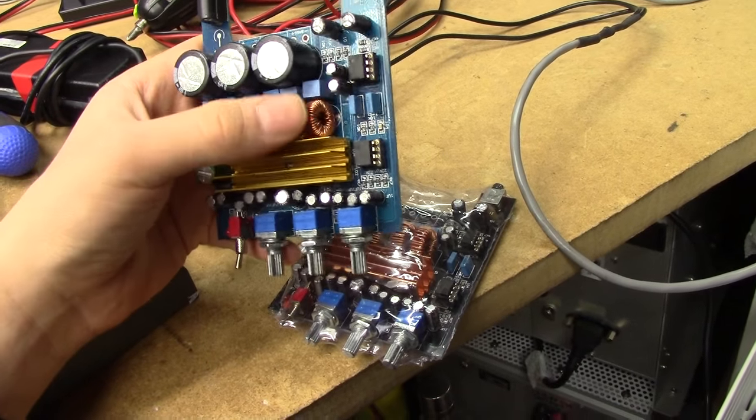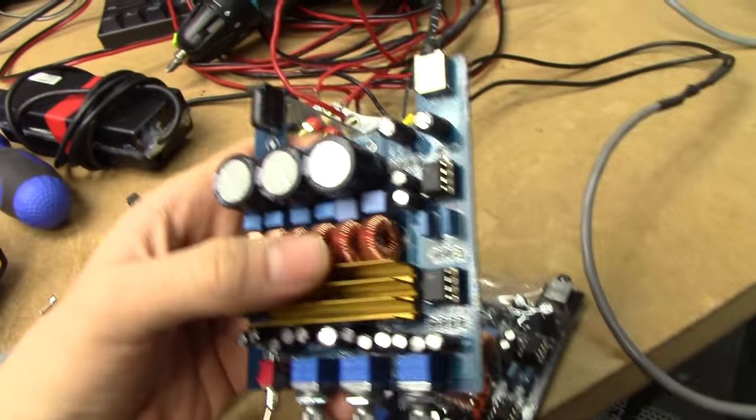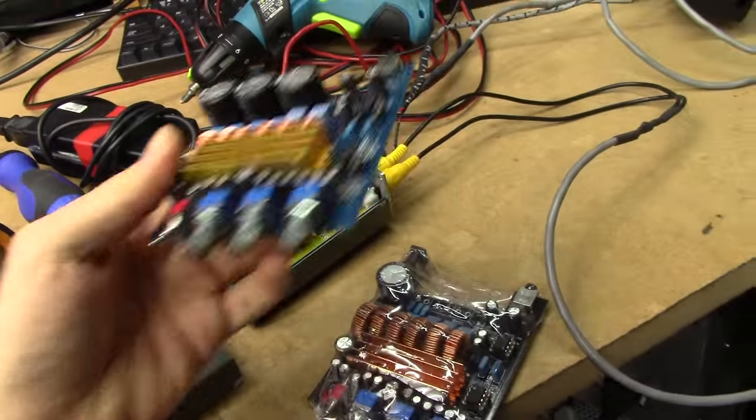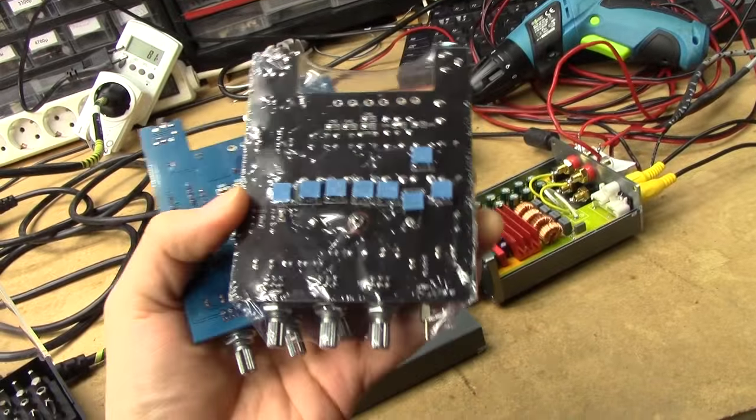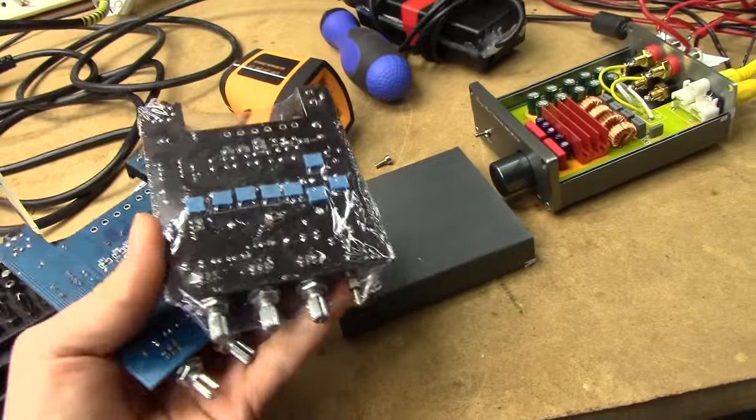I think this one is dual, I think both of these are dual TPA3116. Where they just run one of them with two channels in parallel because they've got six output coils. And one of the channels is slightly beefier than the other. And these are supposed to be 2.1.